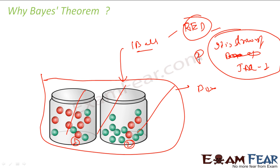You want to define the probability that this ball is drawn from jar 1. Till now we know that a ball is drawn from jar 1, and we find the probability it is red or green. But now the jar itself is hidden and you took out one ball and found that the ball is red, and you need to find the probability it is from jar 1. So the question is now reversed. Such scenarios we solve using Bayes' theorem.